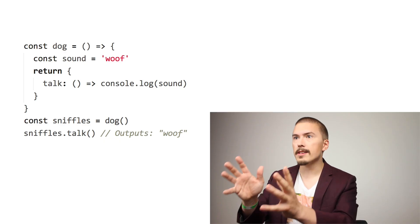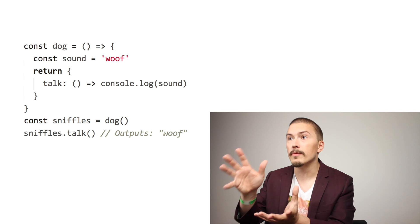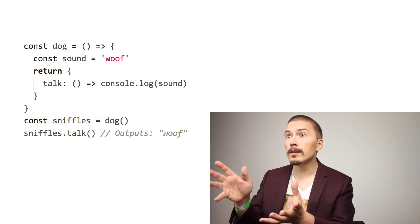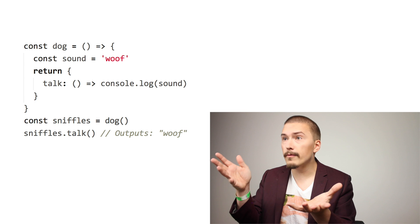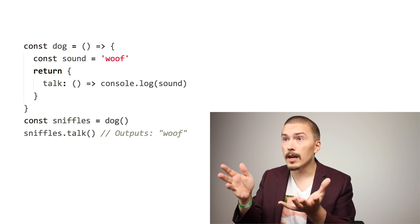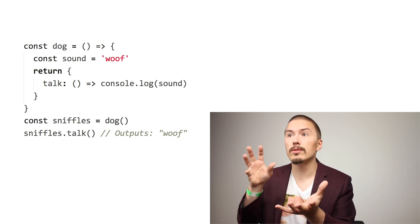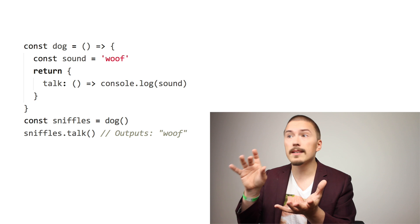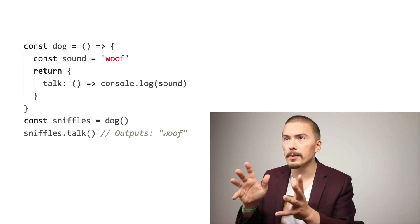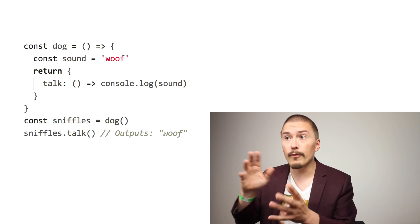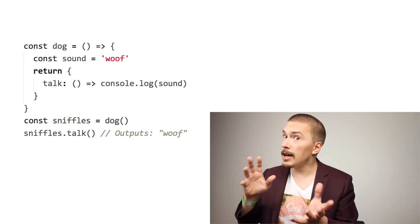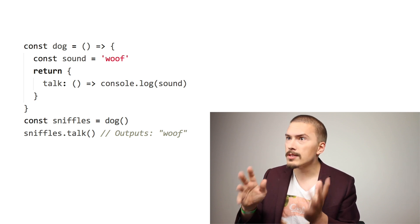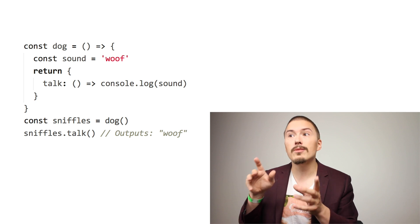Enter factory functions. Here is our dog rewritten as a factory function. Now dog is simply a function. In it we create a variable sound and we assign the value woof to it. We then return a simple object literal with one property — talk — a function which logs out the value of sound. And because of the awesomeness of closures, talk has access to the variable sound.